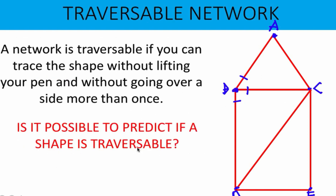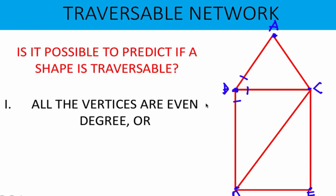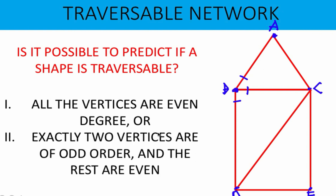Going back to our question: is it possible to predict if a shape is traversable or not? Here is the important lesson. There are two conditions to check whether a given network is traversable. The first condition is that all the vertices are even degree — if all vertices are even degree, the network is traversable. The second condition is if exactly two vertices are of odd order and the rest are even, then the graph is also traversable.